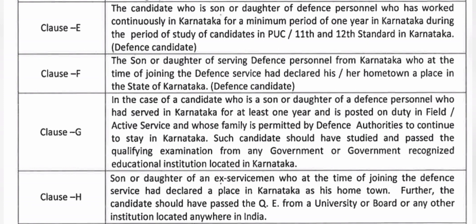Clause E is for defense personnel whose son or daughter studied in Karnataka, where the parent served in Karnataka for a minimum of one year and their children studied 11th and 12th in Karnataka. Clause F is for a Kannadiga who joined defense service, declared Karnataka as hometown, and is from Karnataka but may be posted elsewhere. Clause G is for son or daughter of defense personnel who served Karnataka for at least one year, posted in active service, and the candidate passed the qualifying exam from a government-recognized institution in Karnataka. Clause H is for children of ex-servicemen.